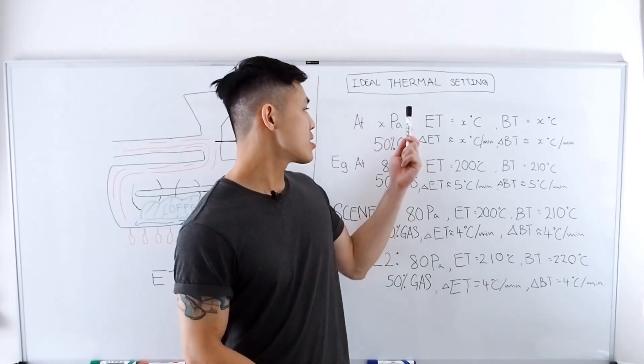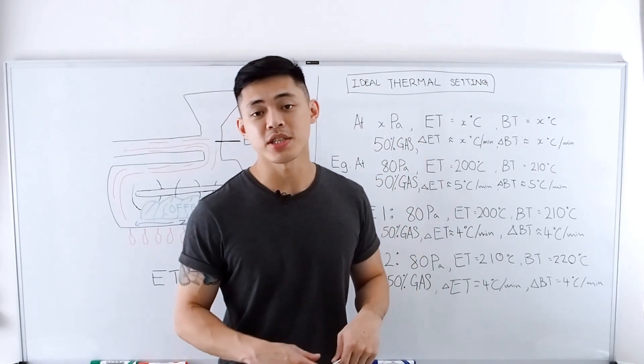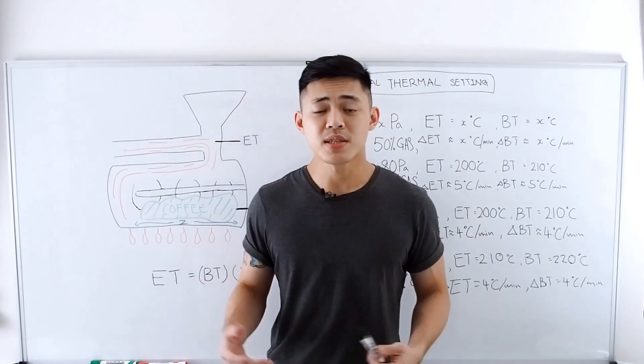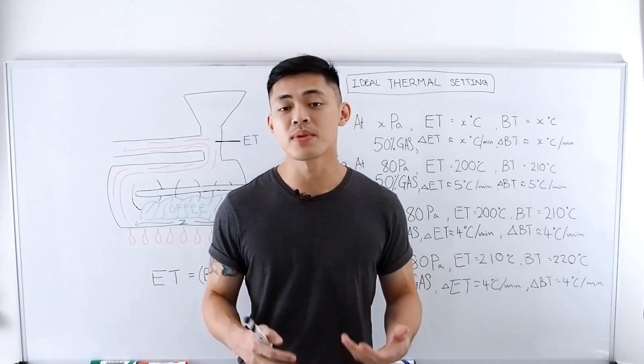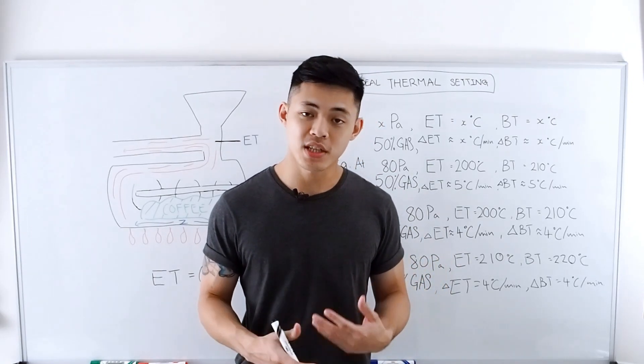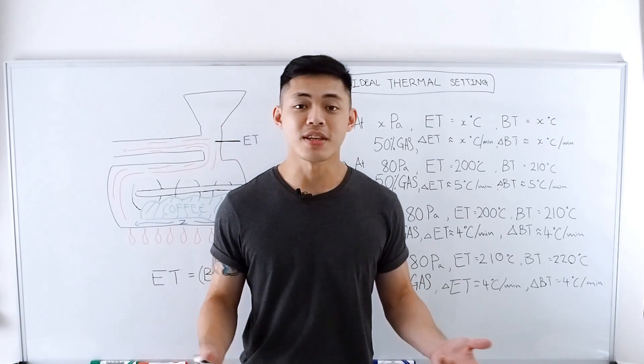But if your ideal thermal setting is already set at a very high negative pressure or a high airflow setting, this might be your only option because you won't be able to cool down the roaster sufficiently by increasing your airflow even more.